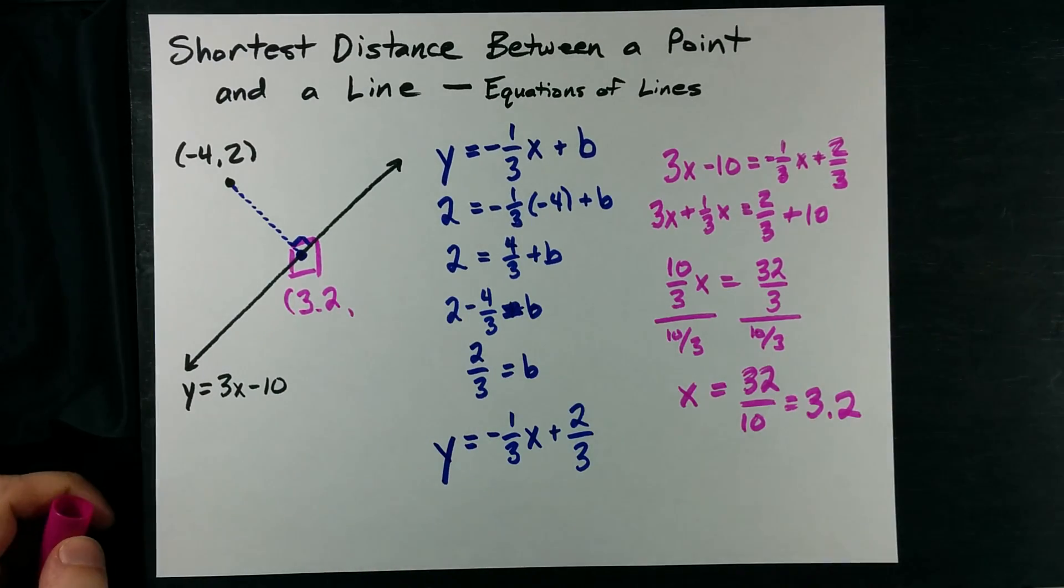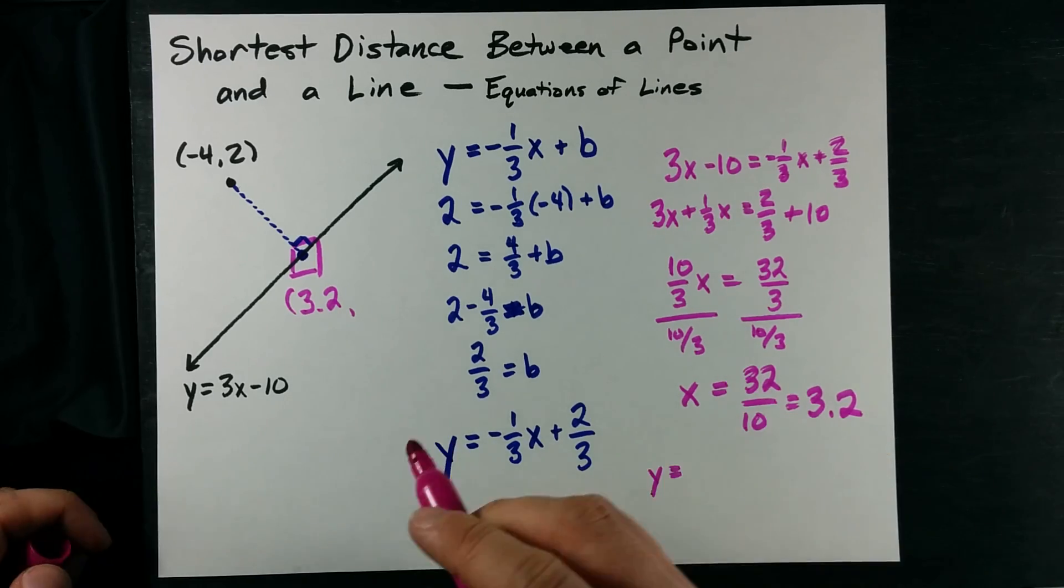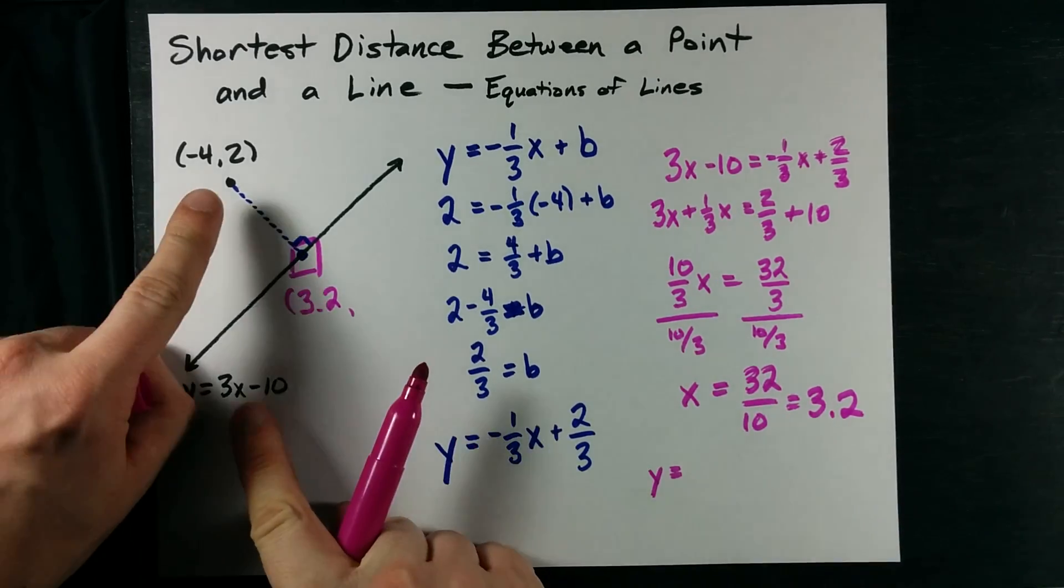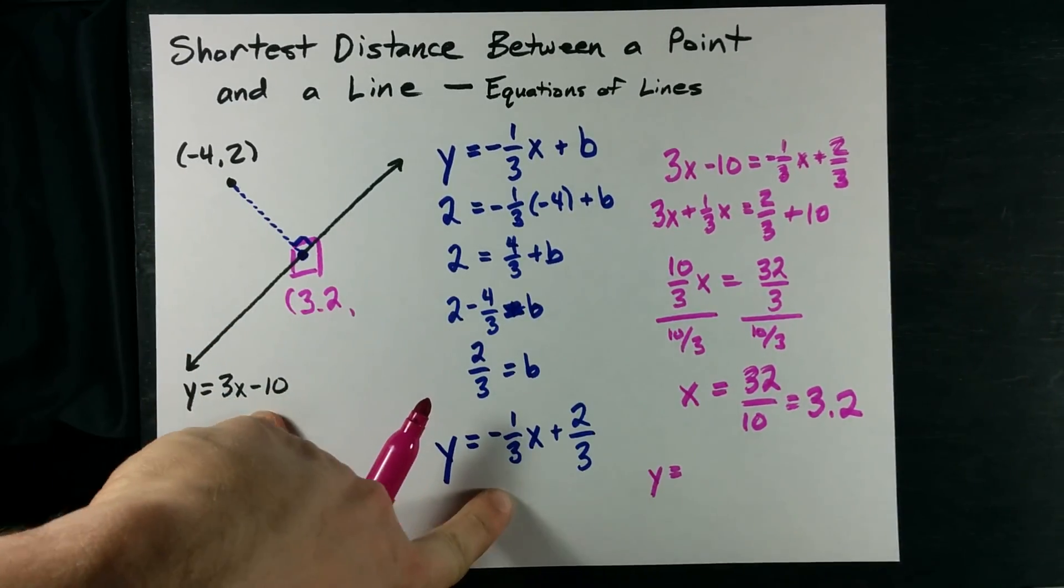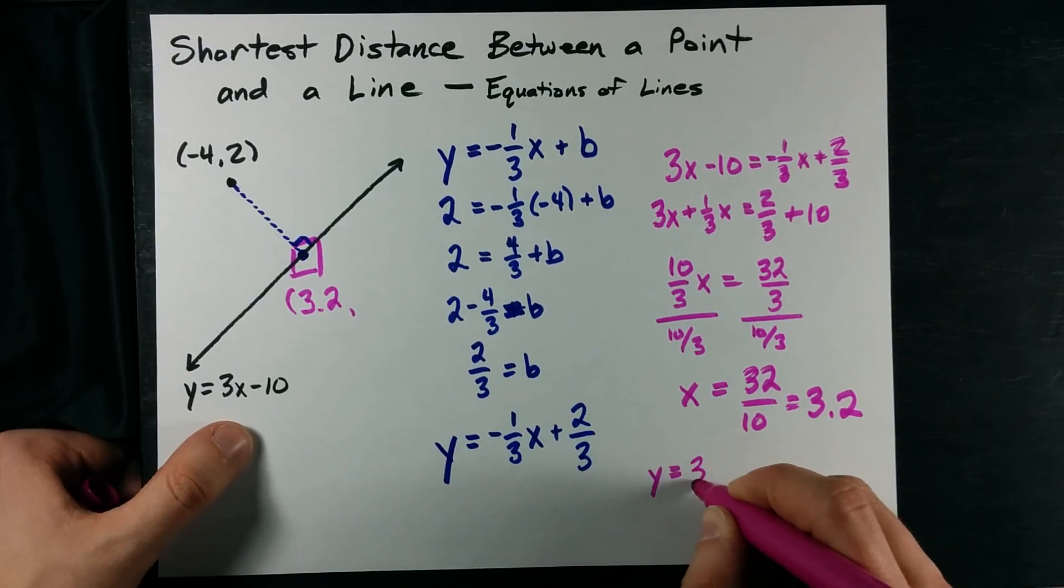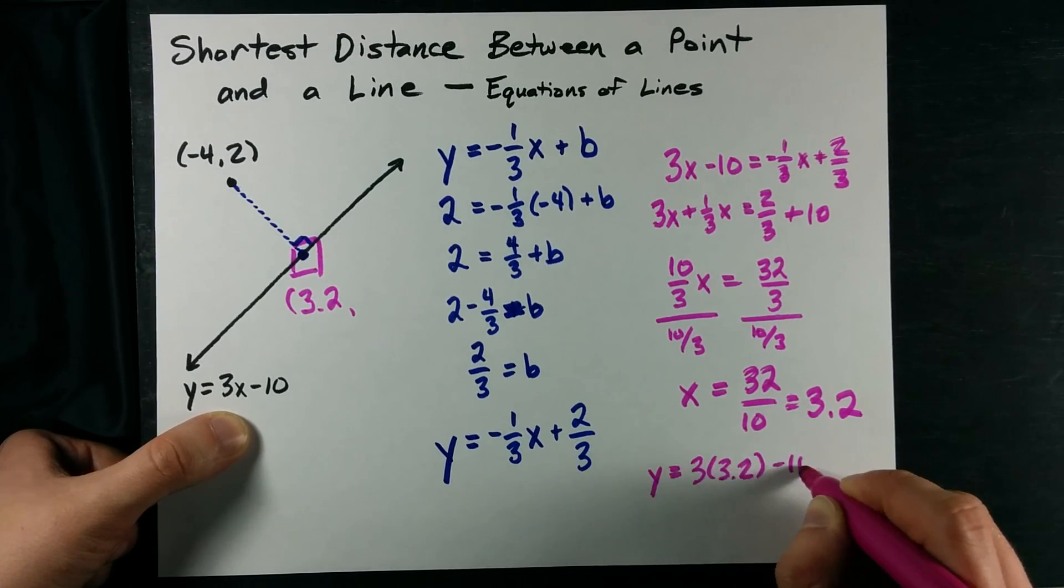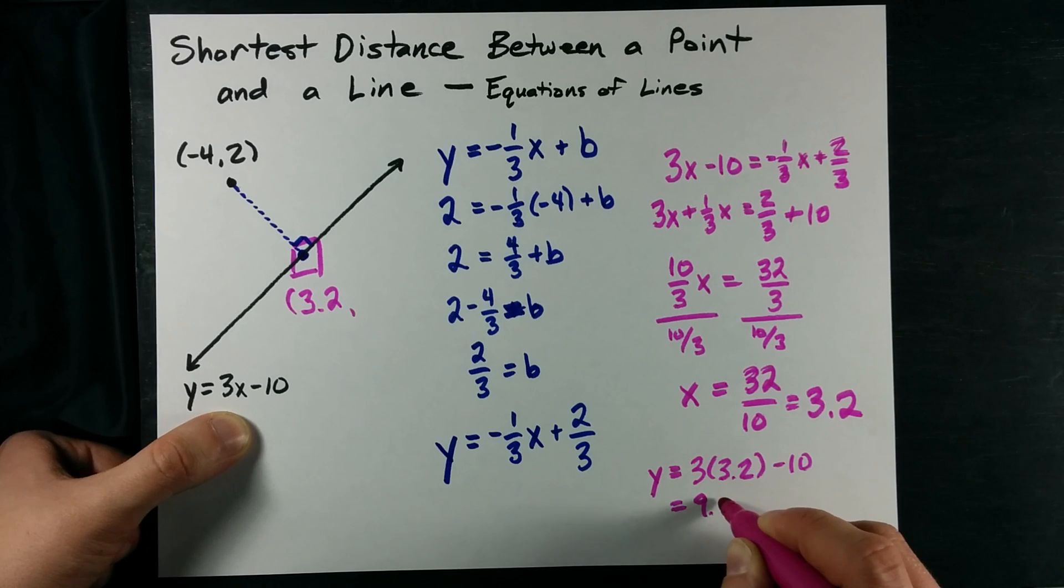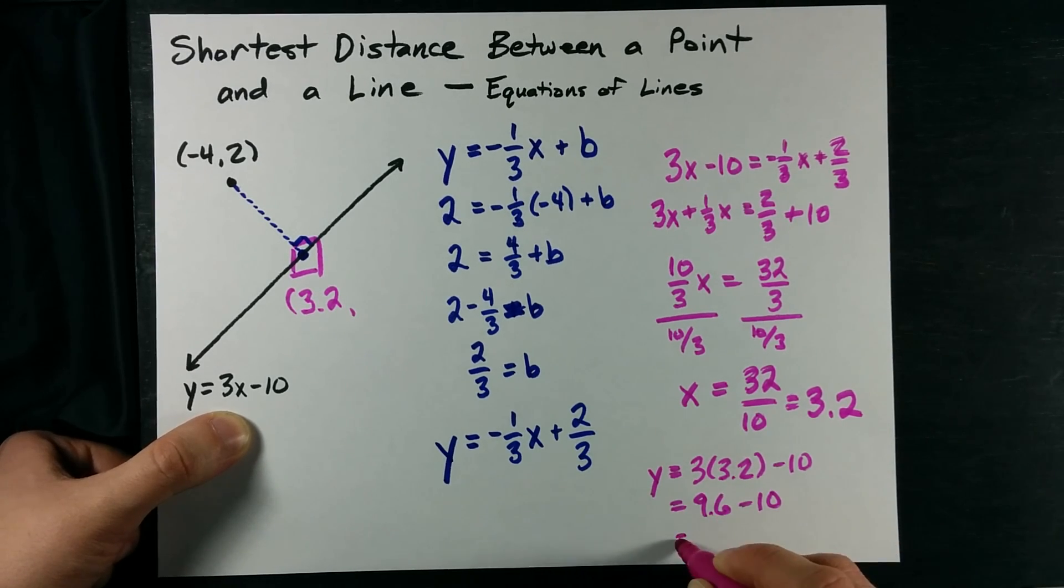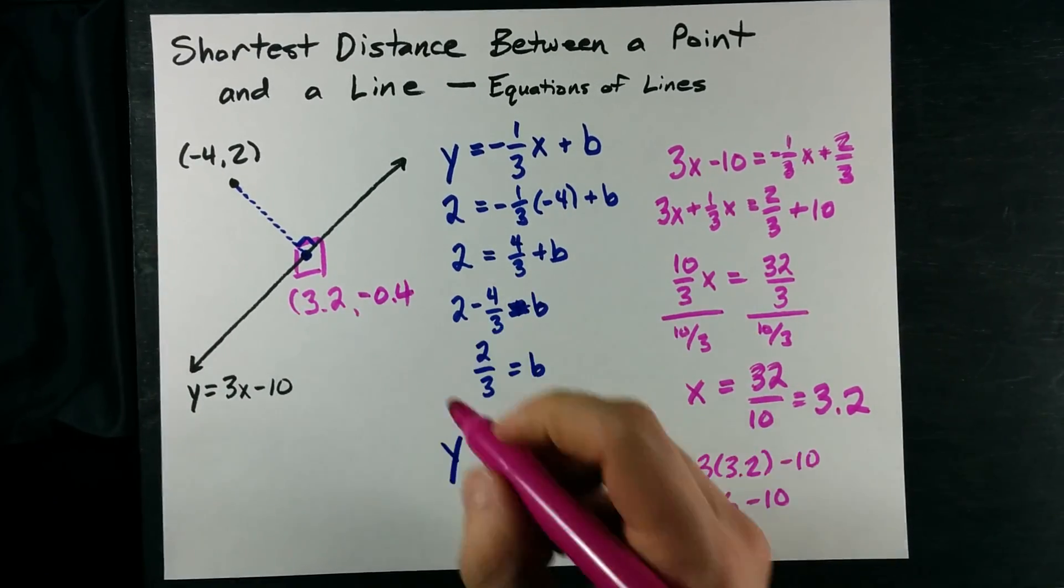I wish I knew what the y coordinate was. Well, we can figure that out. You're allowed to plug that x value into either of these equations to get the y value. I'm going to plug it into the one that scares me the least. That's this first one. That's 9.6 minus 10, so it turns out to be negative 0.4.